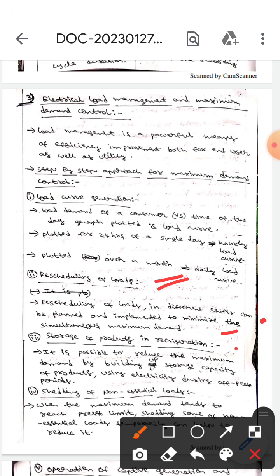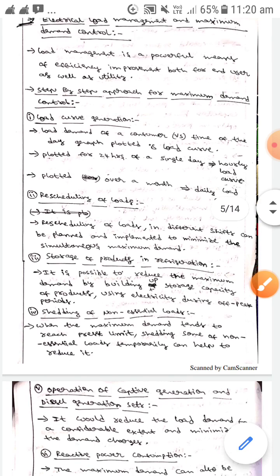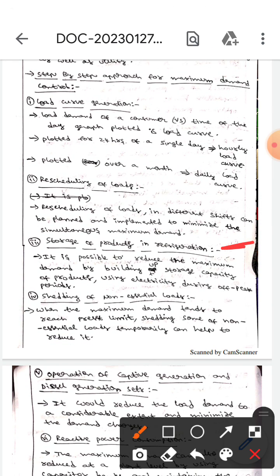The next one is storage of products in refrigeration. It is possible to reduce the maximum demand by building up the storage capacity of products using LCT during half peak periods.